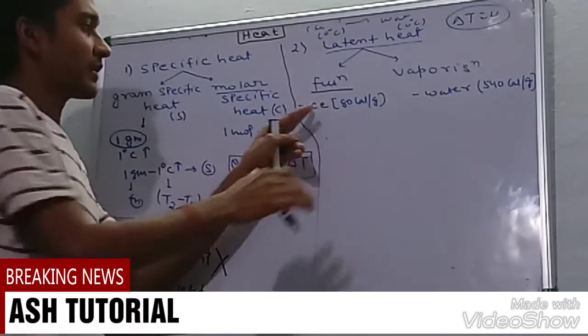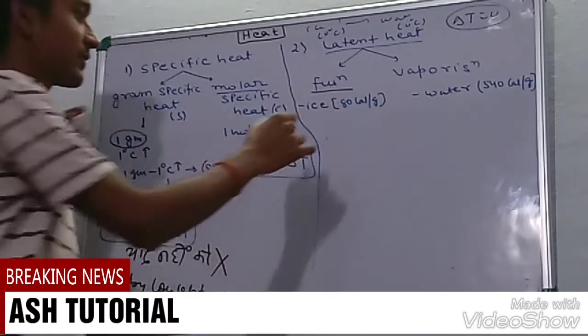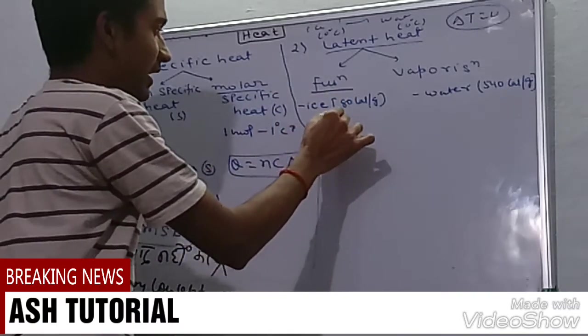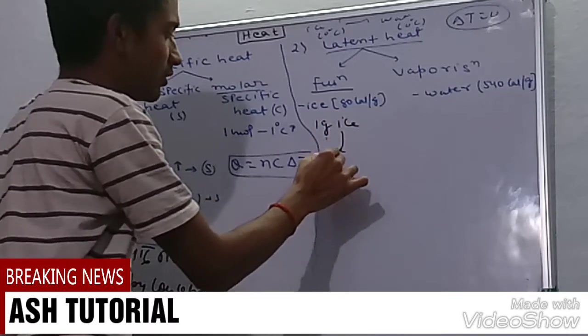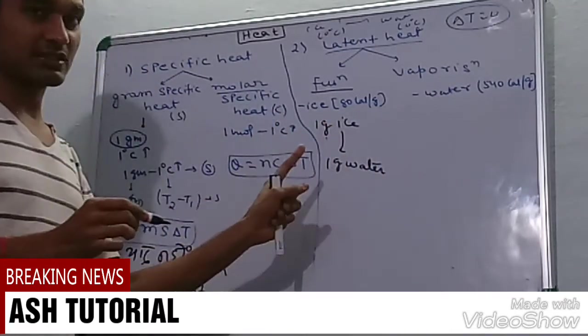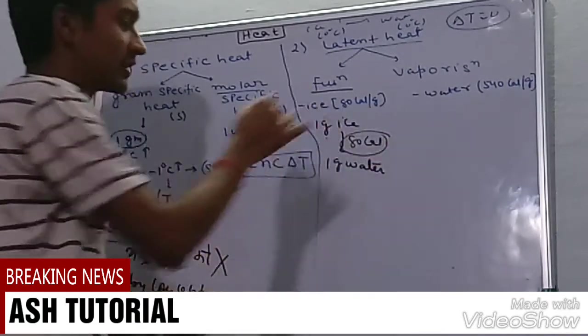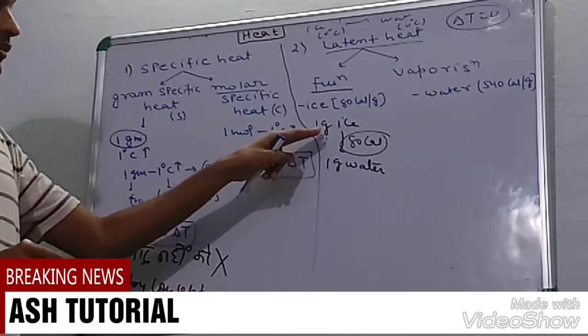Take the example: one gram ice to one gram water at zero degree centigrade, then the heat required is 80 calories.